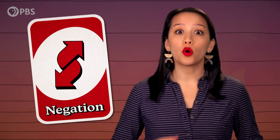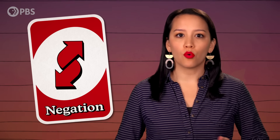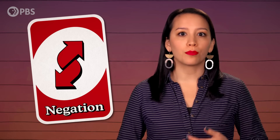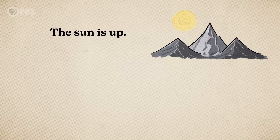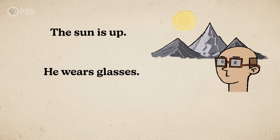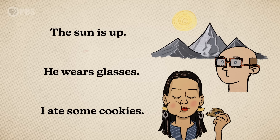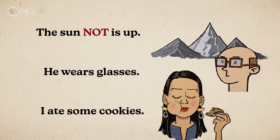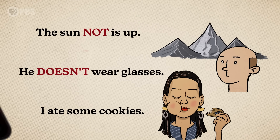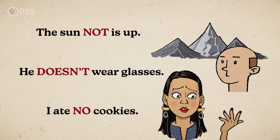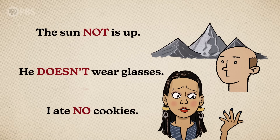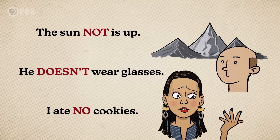In its simplest form, negation is language's uno reverse card. If affirmation expresses that something is true, real, or present — the sun is up, he wears glasses, I ate some cookies — negation expresses the opposite: the sun is not up, he doesn't wear glasses, I ate no cookies. But notice how we add to subtract.